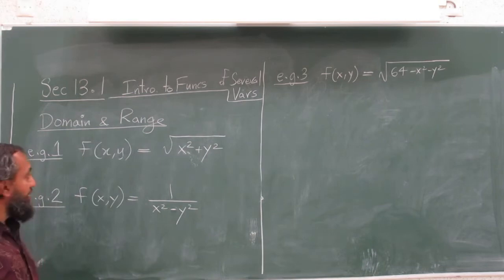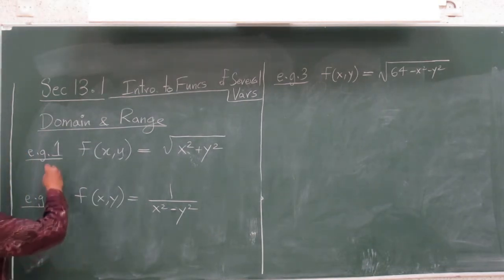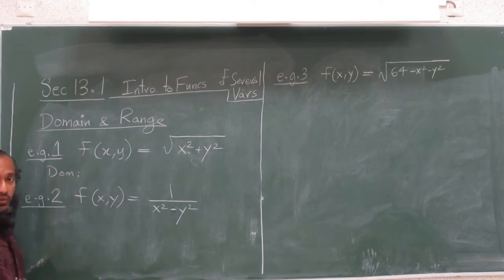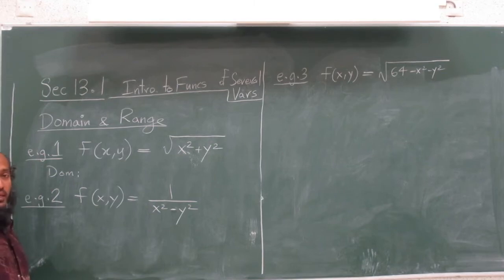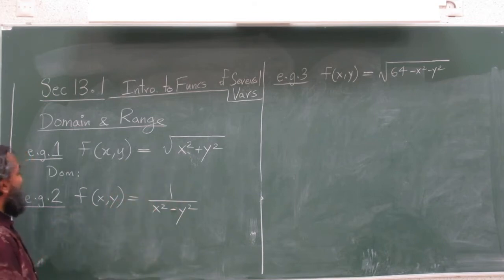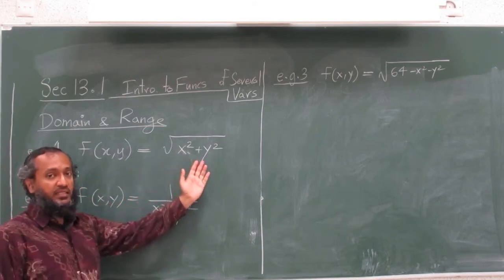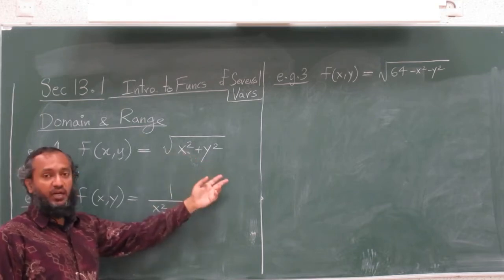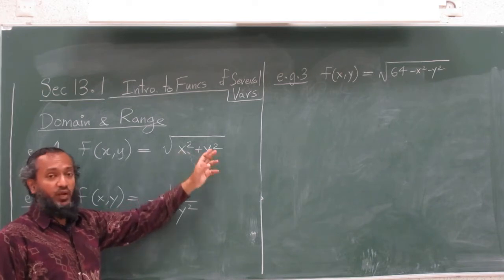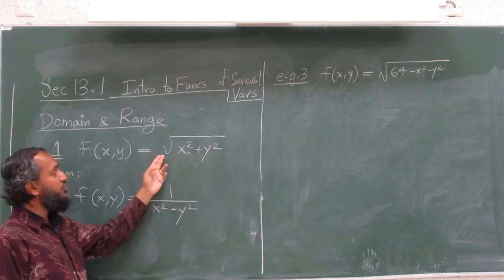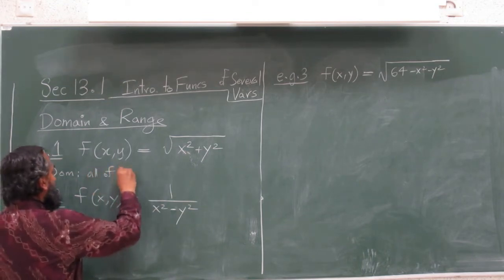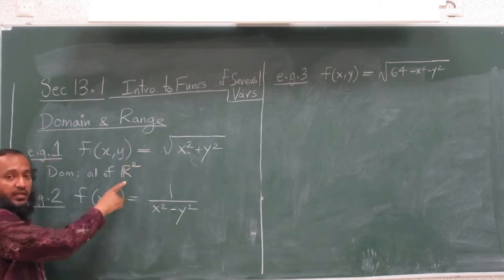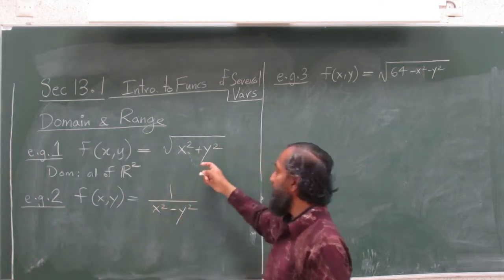How do we understand the domain and range of this function? Domain is the same idea: what inputs can you put in so the formula will not complain and will be able to give you an output. For this particular formula, x and y can be any value — x could be positive or negative, y could be zero — because x squared plus y squared will be positive or zero, and the square root will not complain. So the domain is all of R², every x-y point in R² can be plugged in.